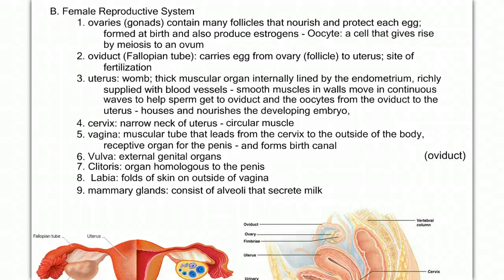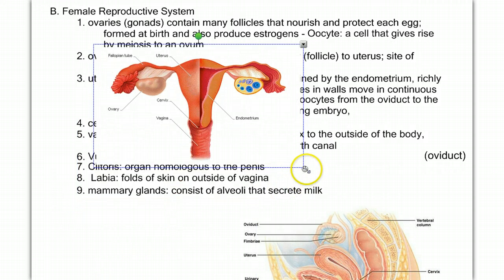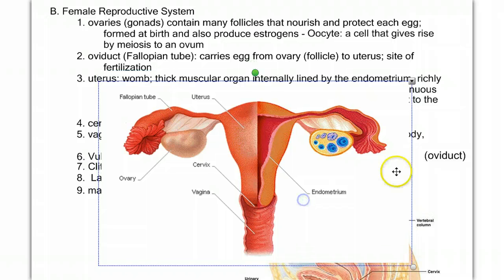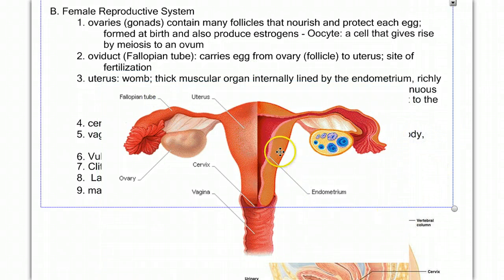Today we're going to review the female reproductive system and the menstrual cycle. The female reproductive system consists of two ovaries and the oviduct, or fallopian tubes.